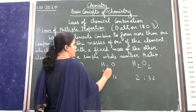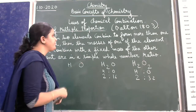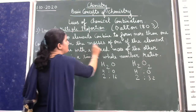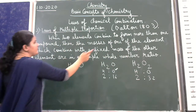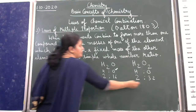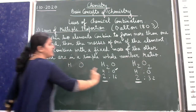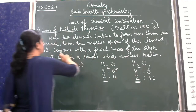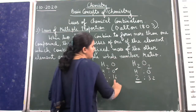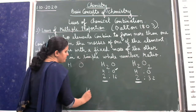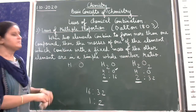So you find the ratio of oxygen in both compounds. When the mass of hydrogen is kept constant at 2, the masses of oxygen are 16 and 32. The ratio of oxygen is 16 to 32, which simplifies to 1 to 2 — a simple whole number ratio.